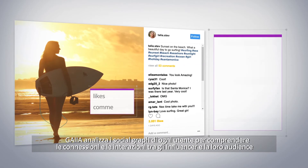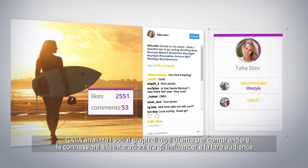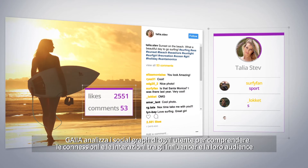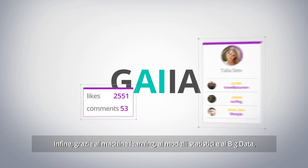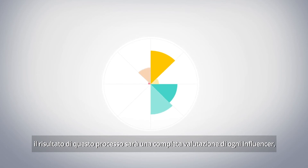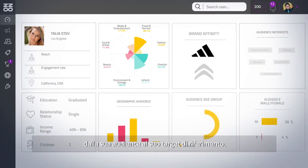Gaia analyzes a user's social graph to understand the connections and interactions between influencers and their audience. Finally, thanks to machine learning, statistical models and big data, the result of this process is a complete valuation of an influencer and effective audience analysis and targeting.